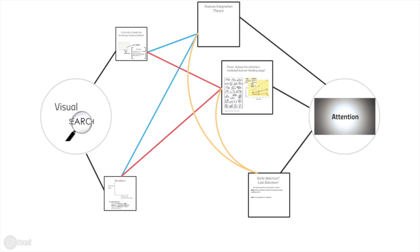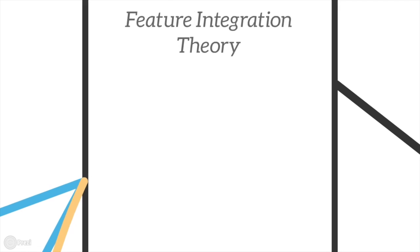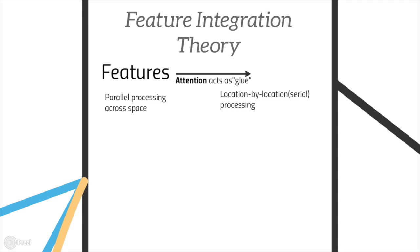Some of the most influential theories in attention have been verified using visual search experiments. Take the feature integration theory as an example. The theory proposes that the processing of basic features is parallel across the space. Attention is then required to select and combine the features in serial for each location in order to identify the objects.